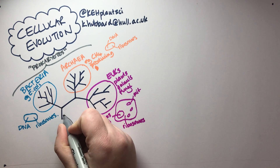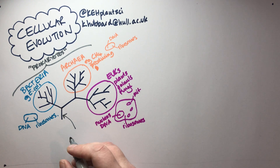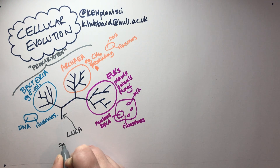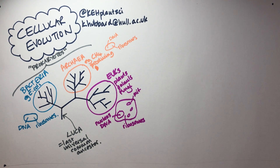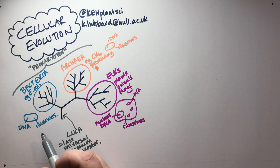All modern cells fit on this evolutionary tree — they are all related to each other ultimately. This organism here is what we call LUCA, the Last Universal Common Ancestor. At some point deep in evolutionary time there was one cell that gave rise to all of the modern cells that we see today.